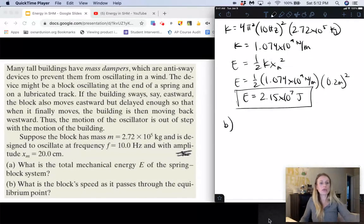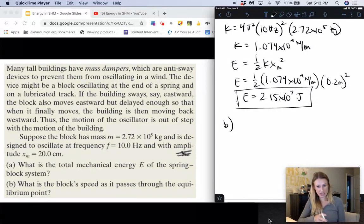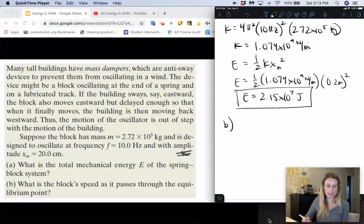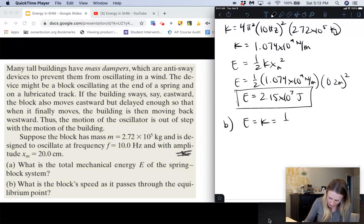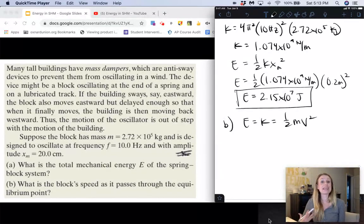And then for b, we want to know what is the block speed as it passes through the equilibrium point. Now we know at the equilibrium point all of that energy is now in kinetic energy. So we can set our total energy equal to our kinetic energy to find our maximum velocity now. So we get energy is equal to kinetic energy, which is 1/2 mass times velocity squared. So here they're asking for just the speed as it passes through the equilibrium point. They can also ask you, what's the maximum velocity of the block? Now here it is at the equilibrium point, so it's the same thing, right?